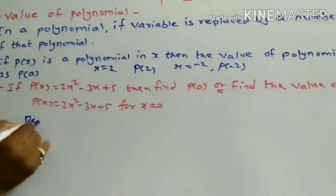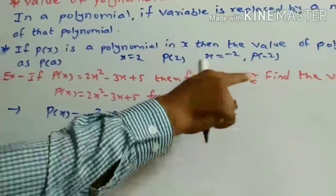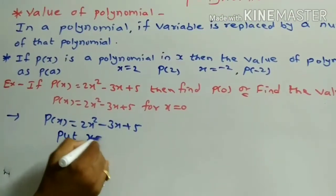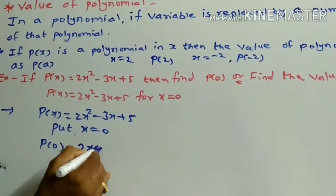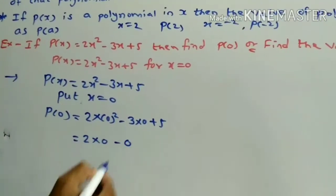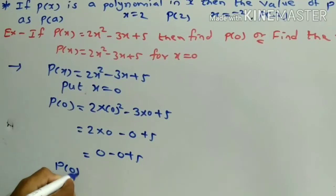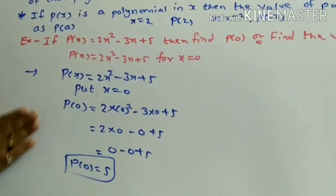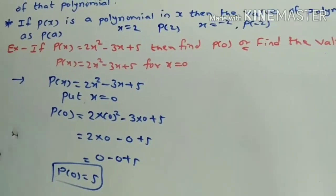To solve this, we have p(x) = 2x squared minus 3x plus 5, and we have to find p(0), meaning the value of the polynomial for x equal to 0. So put x equal to 0: p(0) = 2 into 0 squared minus 3 into 0 plus 5, which gives 0 minus 0 plus 5. Therefore, p(0) is equal to 5. To find the value of a polynomial, put the given value of the variable into the polynomial.